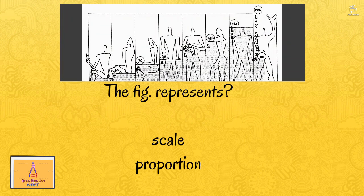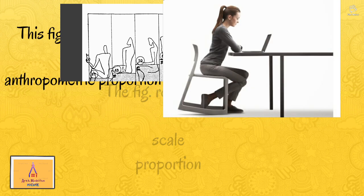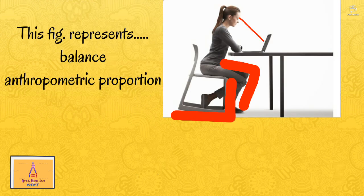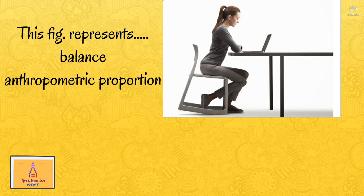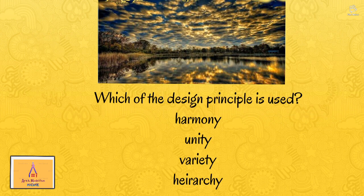This figure is of the Modular Man by Le Corbusier, and the figure represents the proportion of human beings to equipment. The next figure represents anthropometric proportion, because everything is arranged suitable for a human being to handle. Which of the design principles is used? It's not harmony as we can't see any type of variety — it is unity.